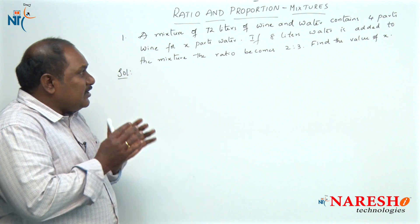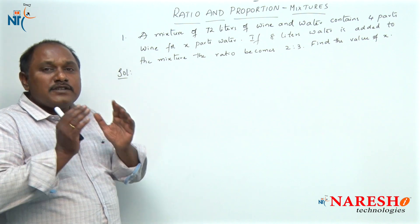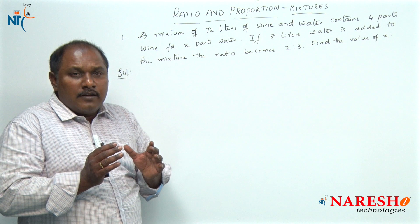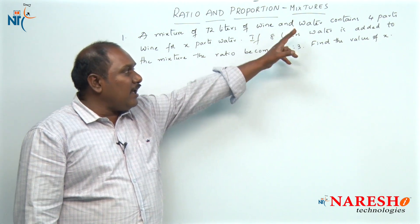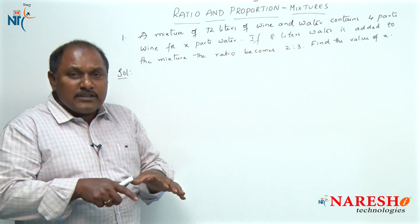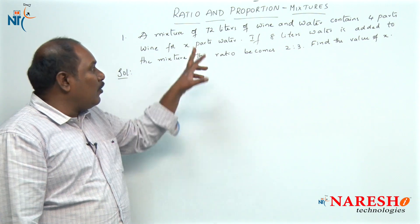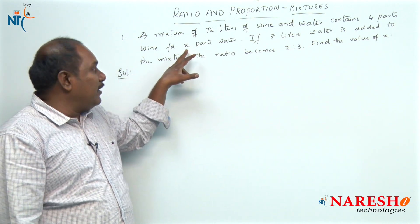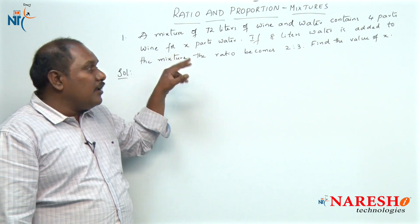Initially there is a mixture of 72 liters, where in that 72 liters you have wine and water, in which wine is 4 parts and water is x parts. We do not know what is the value of x; we need to find the value of x.